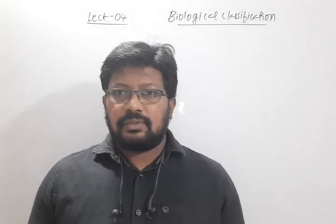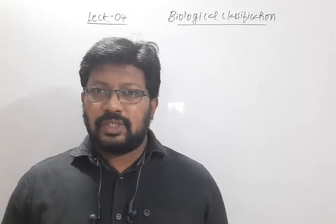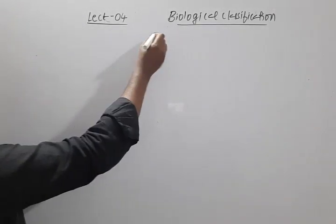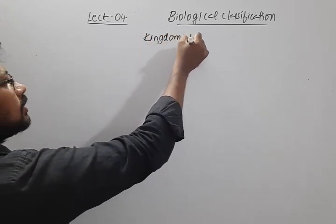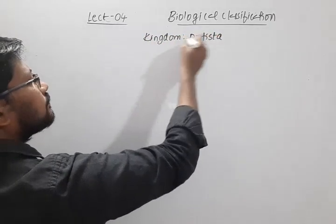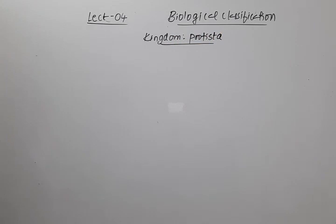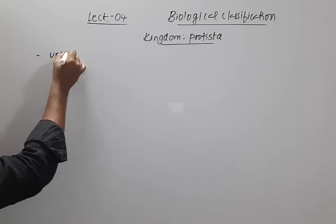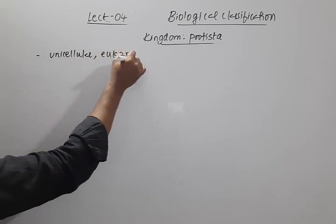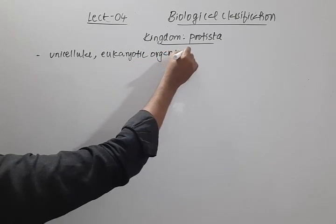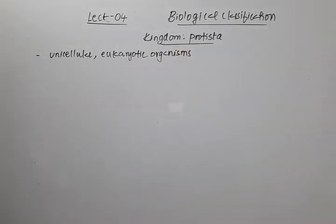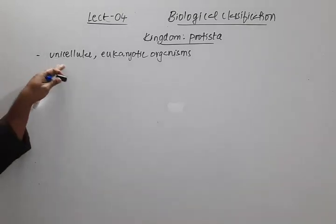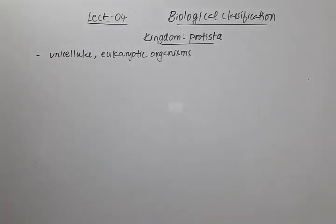Welcome. In the last session we finished about Kingdom Monera. In this session I'm going to discuss the next kingdom — Kingdom Protista. This kingdom includes all unicellular eukaryotic organisms. In Monera it includes unicellular prokaryotic organisms. Here, only unicellular organisms are included; no multicellular organisms are included under Kingdom Protista.